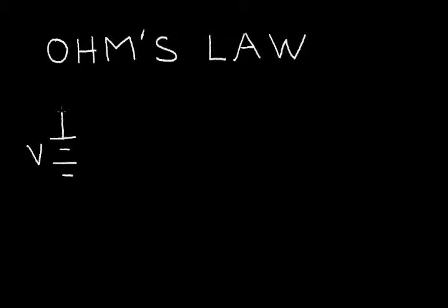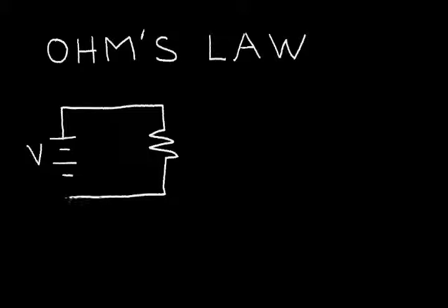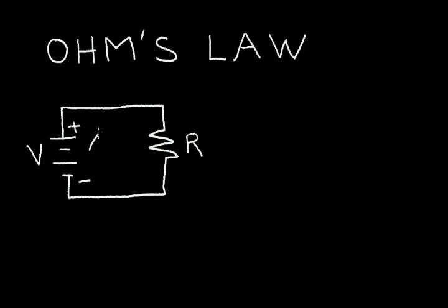Let's take a battery that has a voltage V and connect the plus terminal to a resistor, then connect the negative terminal to the other end of the resistor. So this is the negative terminal, positive terminal, resistor R. Let's ask ourselves: what is the current in the circuit? The current flow...